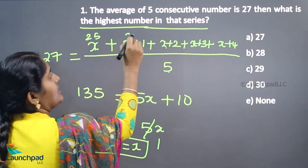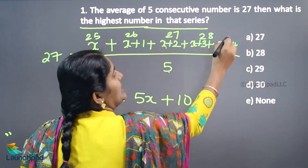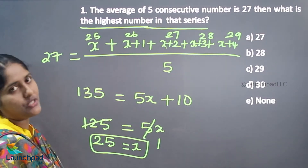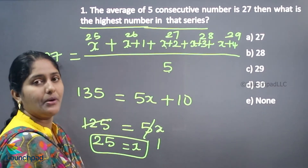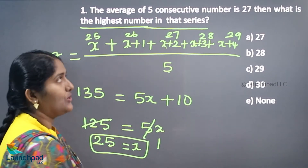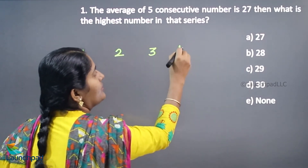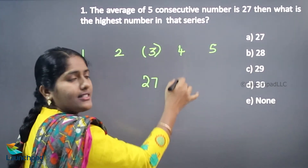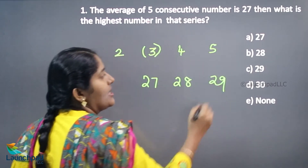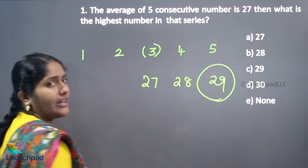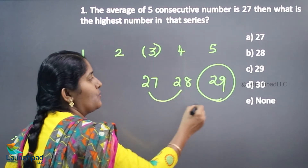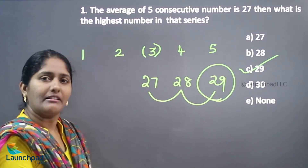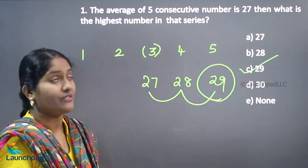So the numbers are 25, 26, 27, 28, 29. No need for this lengthy procedure — when you see consecutive numbers, the middle term is your average. The average is 27, so going forward: 28, 29. The highest number is 29. Option C is the correct answer. We have a shortcut method like this.